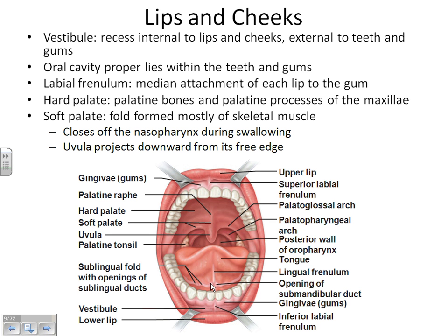Underneath your tongue are little bumps — the openings of your salivary ducts, where saliva comes out of your salivary glands. You'll see two big ones in the middle by the lingual frenulum, which come from the submandibular salivary gland. All the little ones come from your sublingual salivary glands. Go home tonight and look at the bottom of your tongue — you should also see very dark blood vessels there because your tongue is a huge muscle that you use a lot.